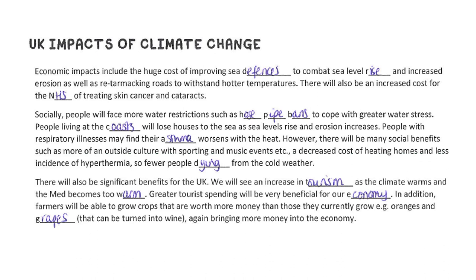We'll also be able to grow more valuable crops — like oranges and grapes, which can be turned into wine worth far more money. Socially, people will face more water restrictions in summers like hosepipe bans due to water stress. People living at the coast may find their houses lost to the sea as erosion increases. People with asthma may find it gets worse. However, there'll be more outdoor culture, we won't spend as much heating houses, and fewer people will die from cold weather.